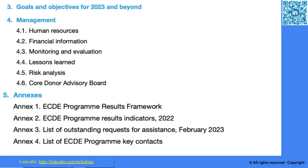The third chapter covers goals and objectives for 2023 and beyond. It gives you a perspective on how things are and how they should be. You can also share your own input, as these are goals and objectives that still need to be achieved going forward.